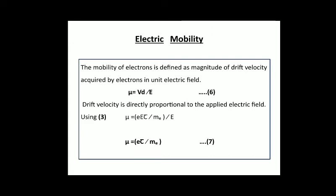Electric mobility: the mobility of an electron is defined as the magnitude of drift velocity acquired by electrons per unit electric field, denoted μ = v_d / E. Hence drift velocity is directly proportional to the applied electric field. By substituting the value of drift velocity, we get the formula for electric mobility: μ = (e × τ) / m_e. This is essentially a proportionality constant.